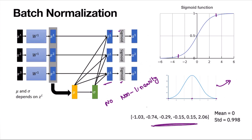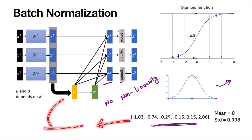We need normalization to remove internal covariate shift, but when we normalize, the network loses learning capability. Should we reverse the normalization to recover expressiveness? That is where the scaling and shifting operations come in — gamma and beta.